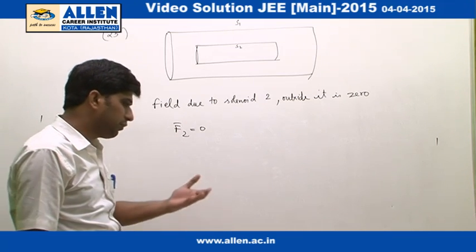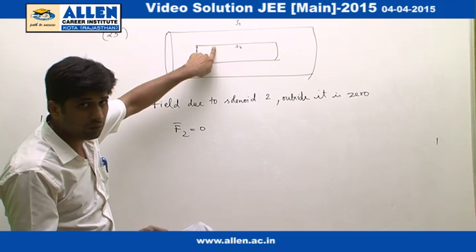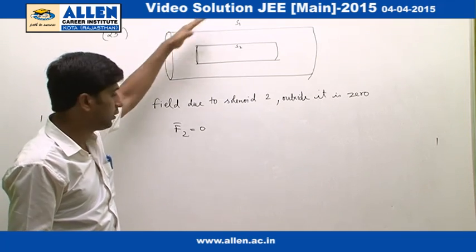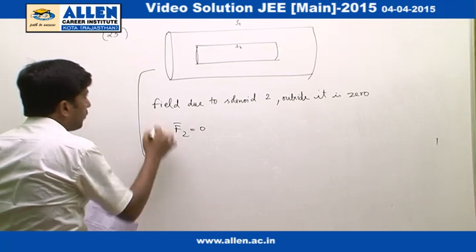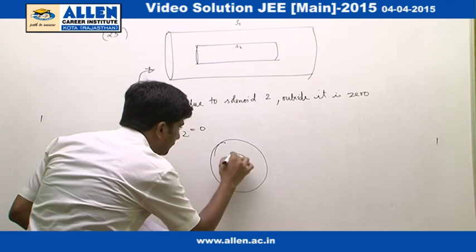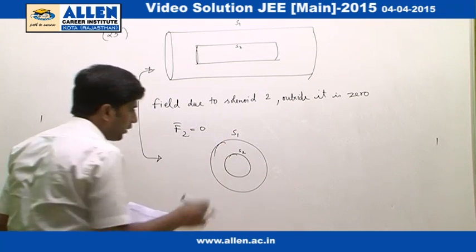Now to get the force F1, which is magnetic force acting on solenoid S2 due to solenoid S1, if we draw a side view of this diagram, we get this view. This is S2 and the outer formula is S1.